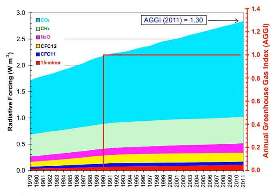In the 1960s, the average annual increase was only 37% of what it was in 2000 through 2007. Total cumulative emissions from 1870 to 2017 were 425 ±20 GtC (1,559 GtCO2) from fossil fuels and industry, and 180 ±60 GtC (660 GtCO2) from land use change.